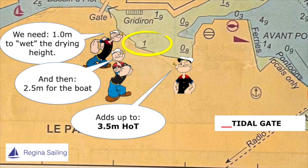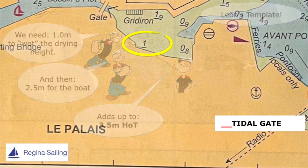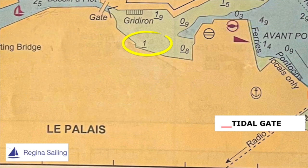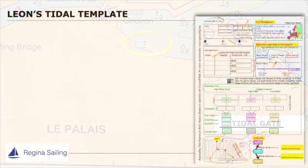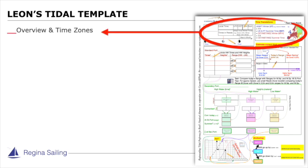How do we know when we've got that height of tide of three and a half meters? That's what the template is all about. The tidal template is made up — everything is gathered on one page. You don't have to fill out everything; you can fill in the parts that you are interested in. It gathers everything in one place. Up here we have the overview with the time zones.